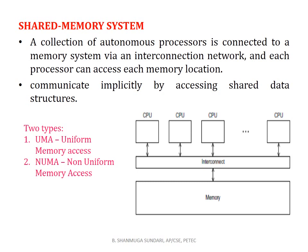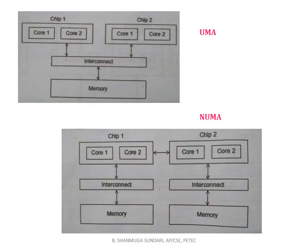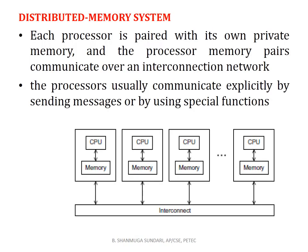Shared memory systems have two sub-types: UMA (Uniform Memory Access) and NUMA (Non-Uniform Memory Access). UMA connects all processors directly to the main memory, while NUMA connects each processor to different blocks of main memory, and processors can access each other's memory blocks via special hardware. In a distributed memory system, each processor is paired with its own private memory, and processor-memory pairs communicate over an interconnection network explicitly by sending messages or using special functions.